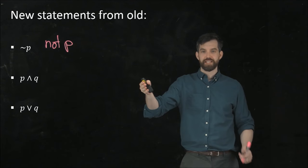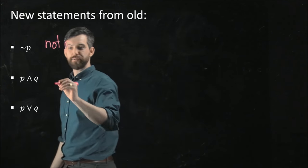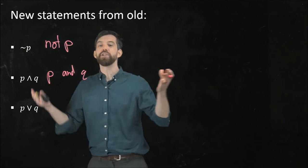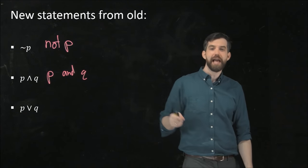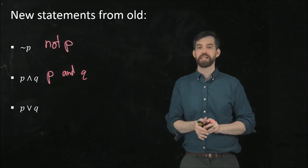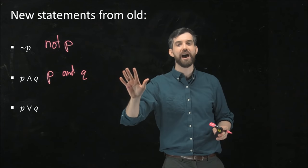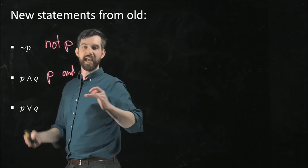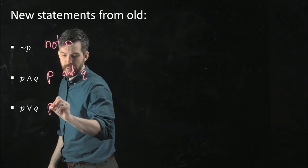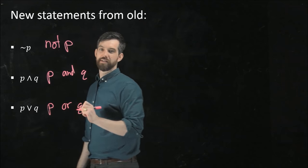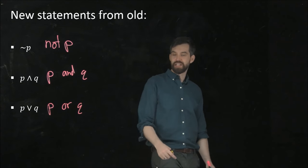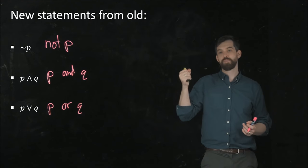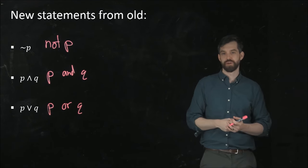The second of these, this wedge symbol, stands for p and q. So, this is a new statement, and it is a shorthand to say that this new statement claims both the first statement p and the second statement q. And finally, this third one stands for or. It says p or q. So, this is fancy notation we're going to use all the time in this course. Not p, p and q, and p or q, and I have these three different symbols to denote that.